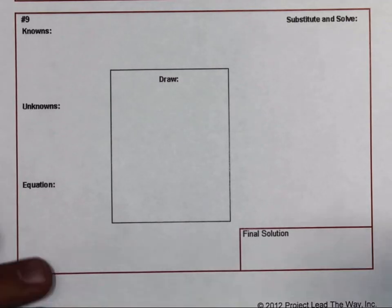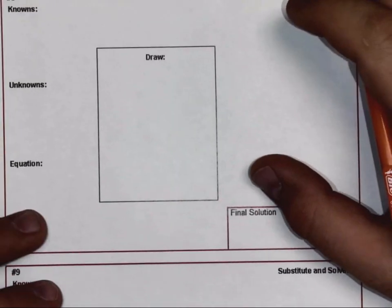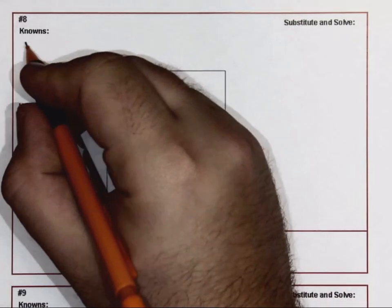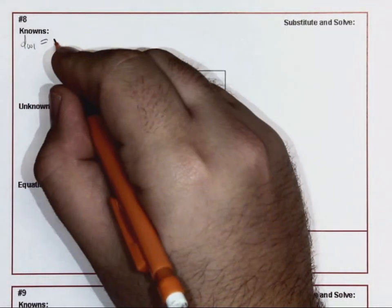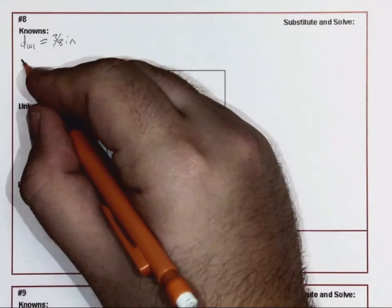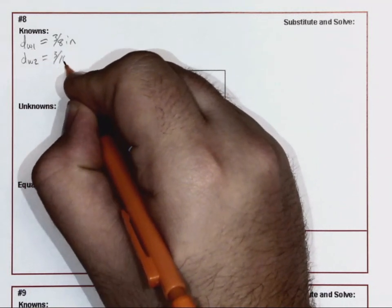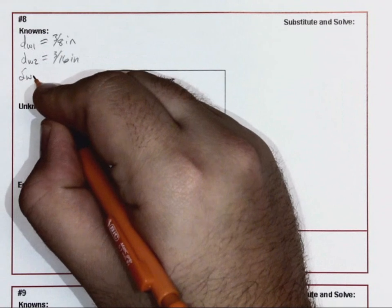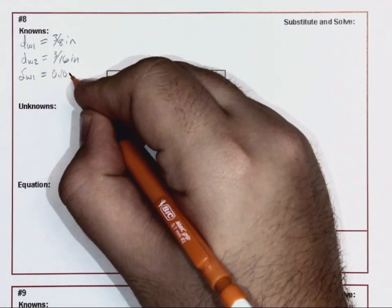As I take a look at my worksheet, you're going to end up seeing that we're going to go ahead and list off our knowns here. So for number eight, dW1 is 3/8 of an inch, diameter of wire one. Diameter of wire two is 3/16.